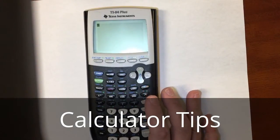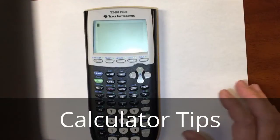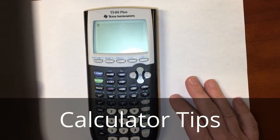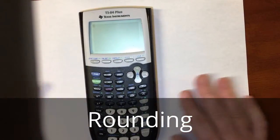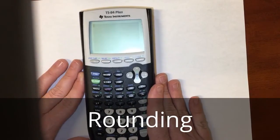All right, let's say that you want to multiply something and you need to be able to round it. Well, a way that you can make your calculator round for you is by using the mode feature.